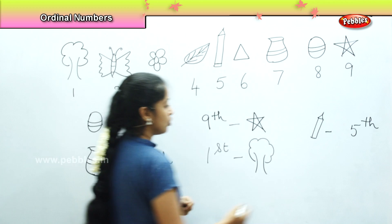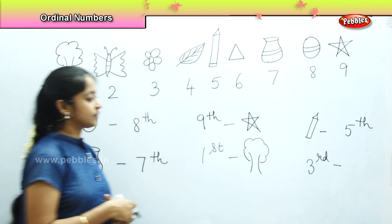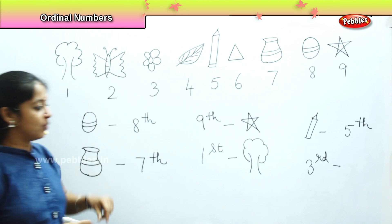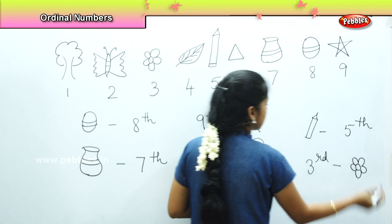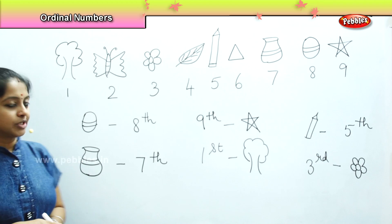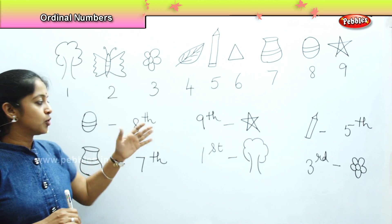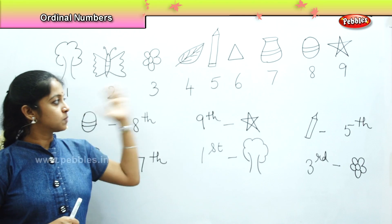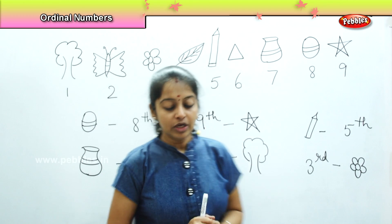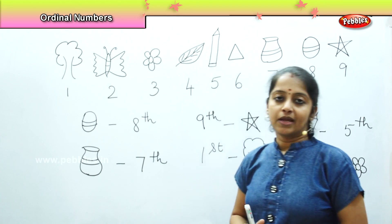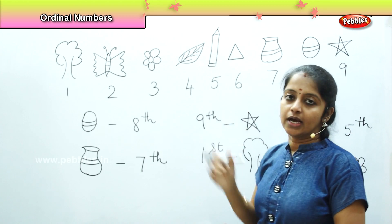Now I want to know what is kept in the 3rd position. Can you tell me? It is the flower. Very good — we can find a flower which is kept on the 3rd position. So now are you able to understand how to tell the position of a particular object? This is how we describe the position of a particular object by seeing how they are placed.